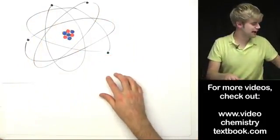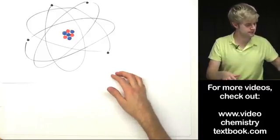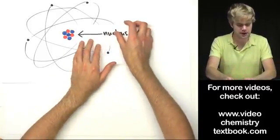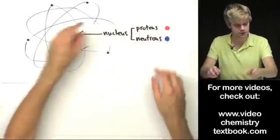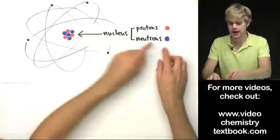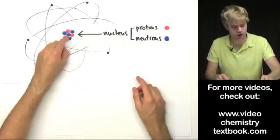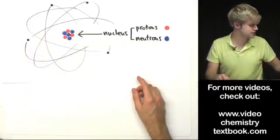In the center of the atom is something called the nucleus, and the nucleus is made up of two tiny particles. There are protons, which I've drawn as red circles here, and then there are neutrons, which I've drawn as blue circles. The nucleus is here in the middle of the atom.